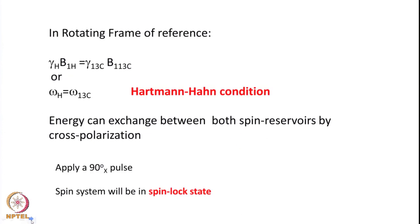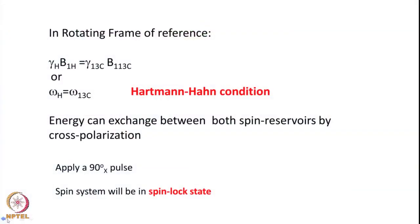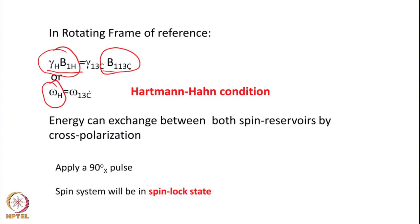We want to change the direction of the effective field by applying a B1 field on both proton and carbon. If we apply two B1 fields — one for proton and one for carbon — we can achieve the condition where gamma_H × B1(H) equals gamma_13C × B1(13C) in the rotating frame. If we do that, we can achieve omega_H equal to omega_13C, and this condition is called the Hartmann-Hahn matching condition.